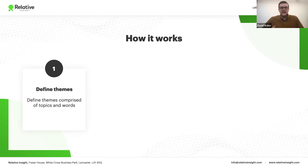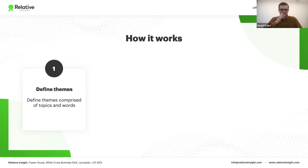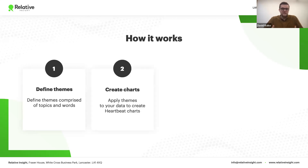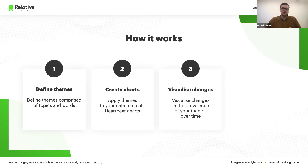You may already have a good idea of what you want to track based on existing knowledge and research, so there is also the option to explicitly tell the platform what to track. Once themes are defined — that's where the work lies — it's about uploading your time series data, applying the themes to create your Heartbeat charts, and then using those charts to visualize changes in the prevalence of your themes over time.